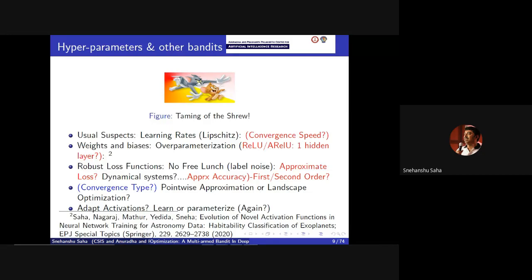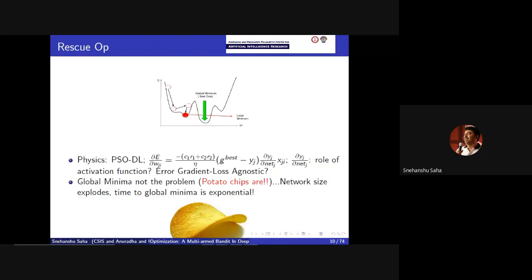By landscape optimization I'm referring to trust region policy kind of methods. There is also this debate about whether we should really be worried about the local minima or try to find the global minima. It's important to escape saddle points, but the obsession to find the global minima could be counterproductive. There is a paper which shows that if you try to do that, the network size explodes and the time to reach the global minima is also exponential. So people really do not care about global minima much when learning for the optimization problem.